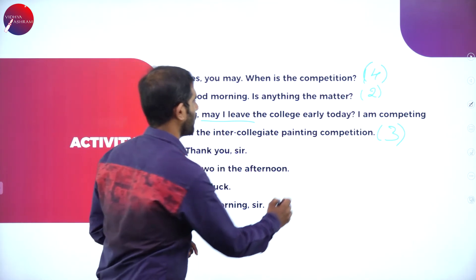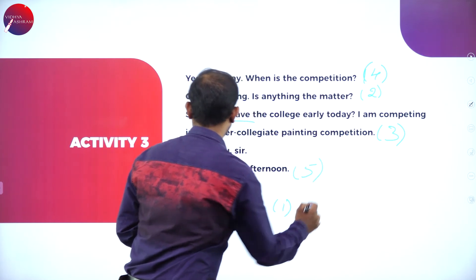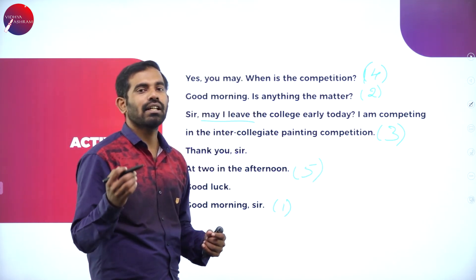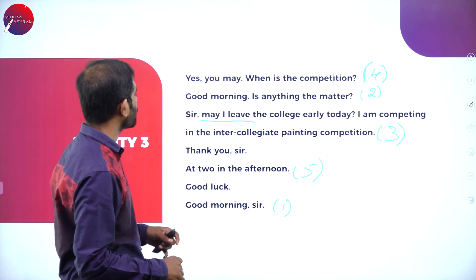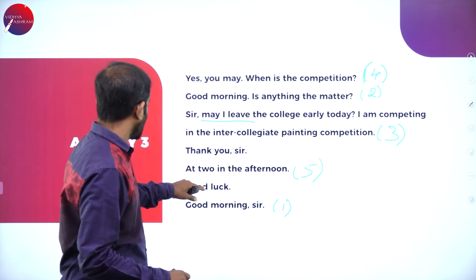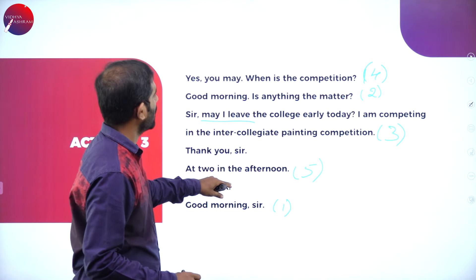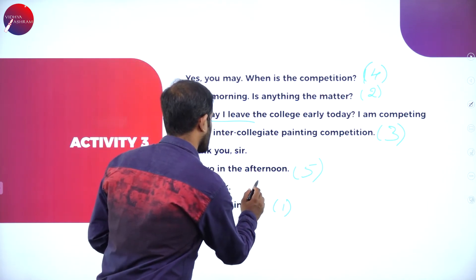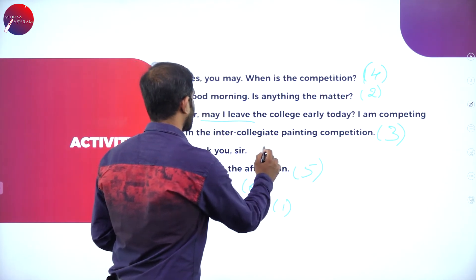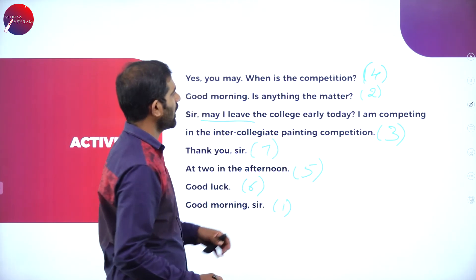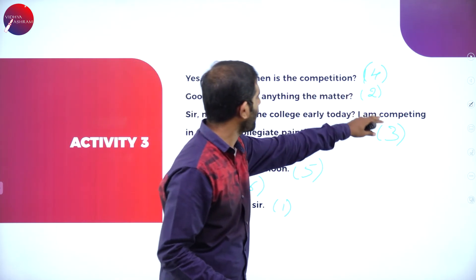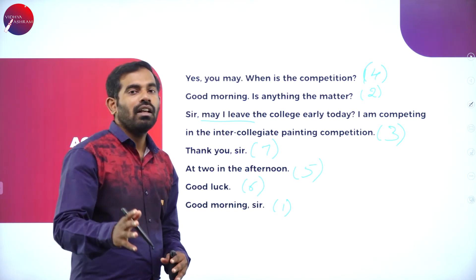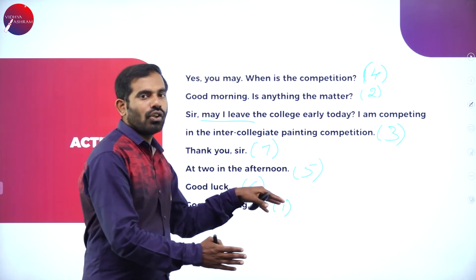Henry replies: 'It is at two o'clock in the afternoon, sir.' Then the principal says: 'Good luck' — that is number six. And Henry says: 'Thank you' — that is the last, number seven. So there are seven dialogues in total. Once you rewrite it, read it once again: Good morning, sir — Henry. Good morning, is anything the matter? — Principal. Sir, may I leave the college early today? I am competing in the intercollegiate painting competition. Yes, you may. When is the competition? At two o'clock, sir. Good luck. Thank you.